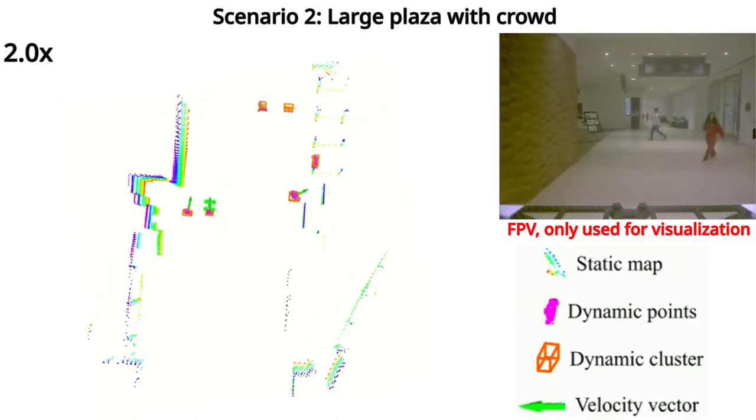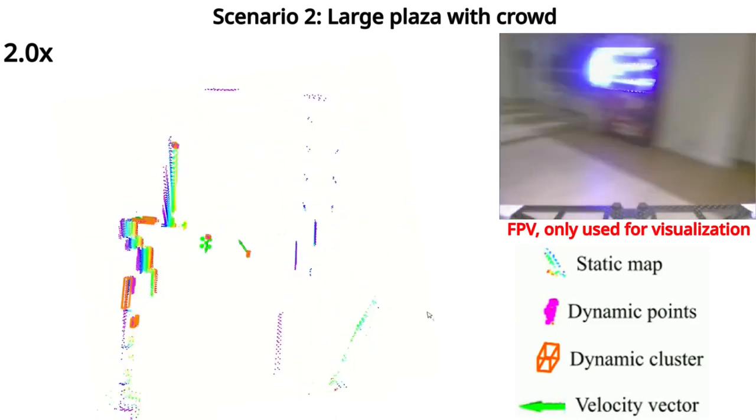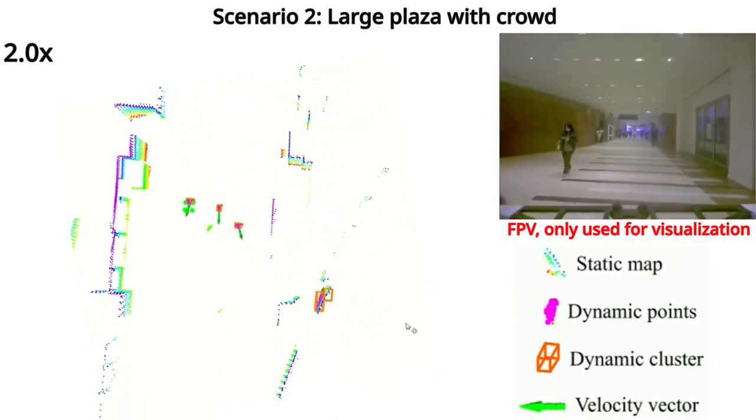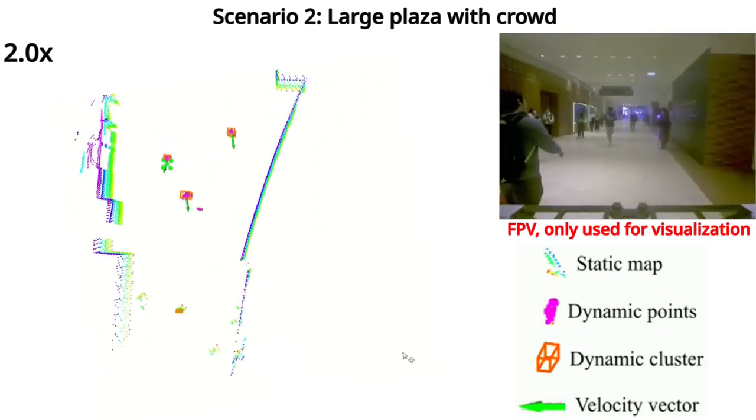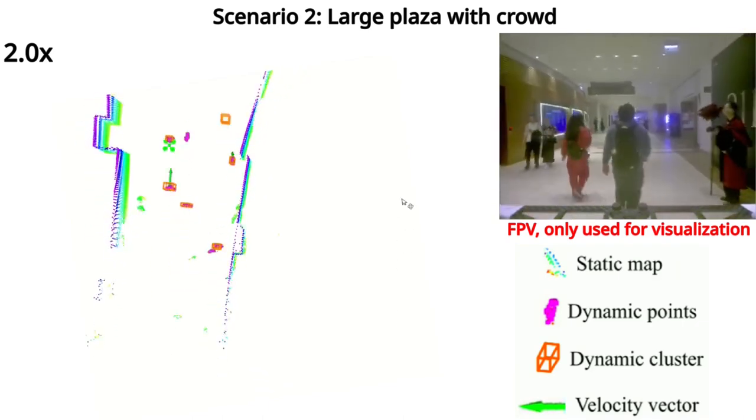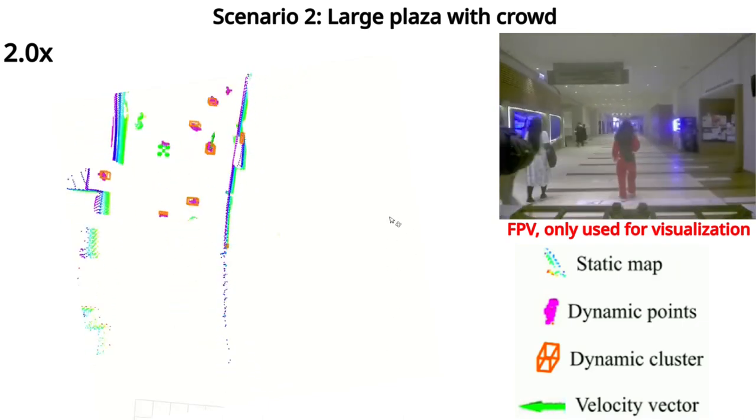Then, we handhold our drone with LiDAR and walk in a large-scale cluttered public zone surrounded by walls and various static objects. There are many pedestrians and all of them are segmented successfully. No static objects are falsely detected.